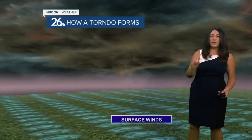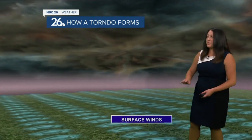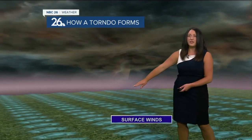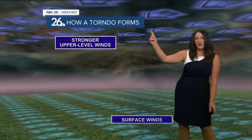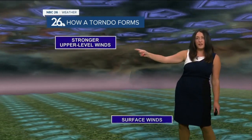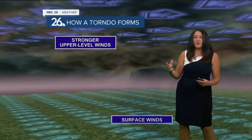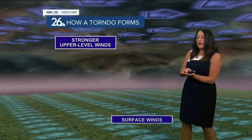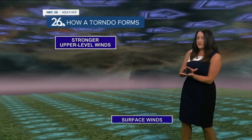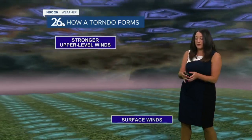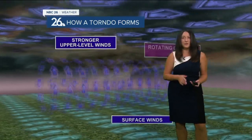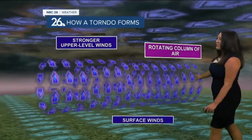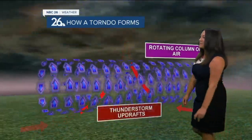First of all, you need wind shear. What that is, is basically the surface winds are going at one speed — a little bit slower — than what's going on up above us, which is a lot faster wind speed. So for example, you could take your remote in your hand right now, have your bottom hand go a little bit slower than your top hand. What happens? You get some rotation. I just rotated my clicker there. So we're getting a rotated column of air within the atmosphere in the storm.